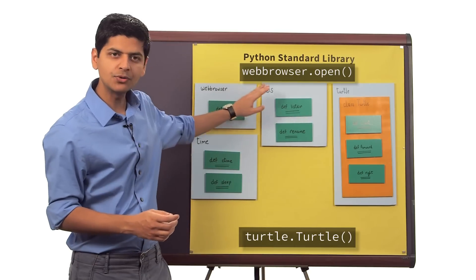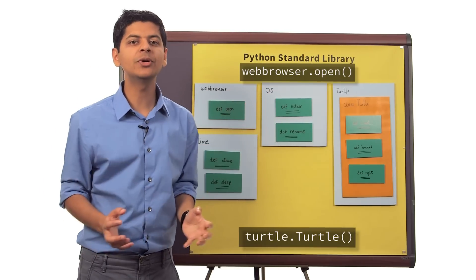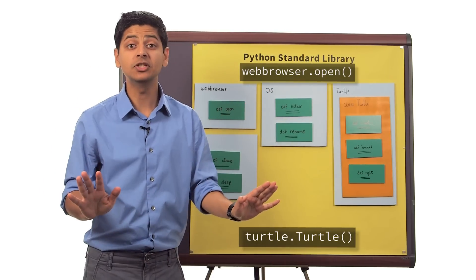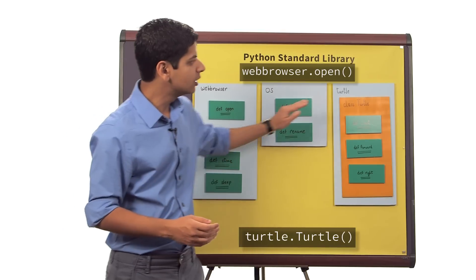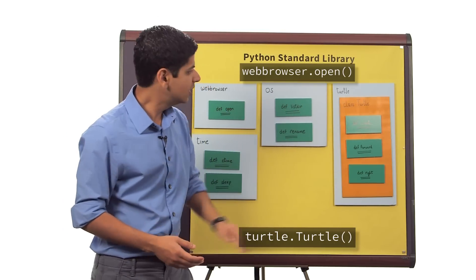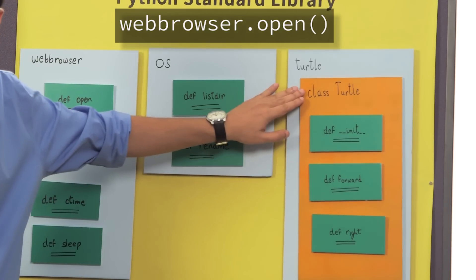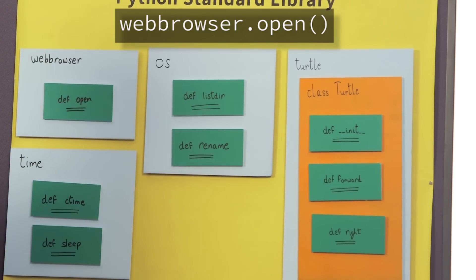When we call webbrowser.open, all we are doing is calling a function. No big deal. But when we call turtle.turtle, the init function defined inside classTurtle, that's the function that gets called.